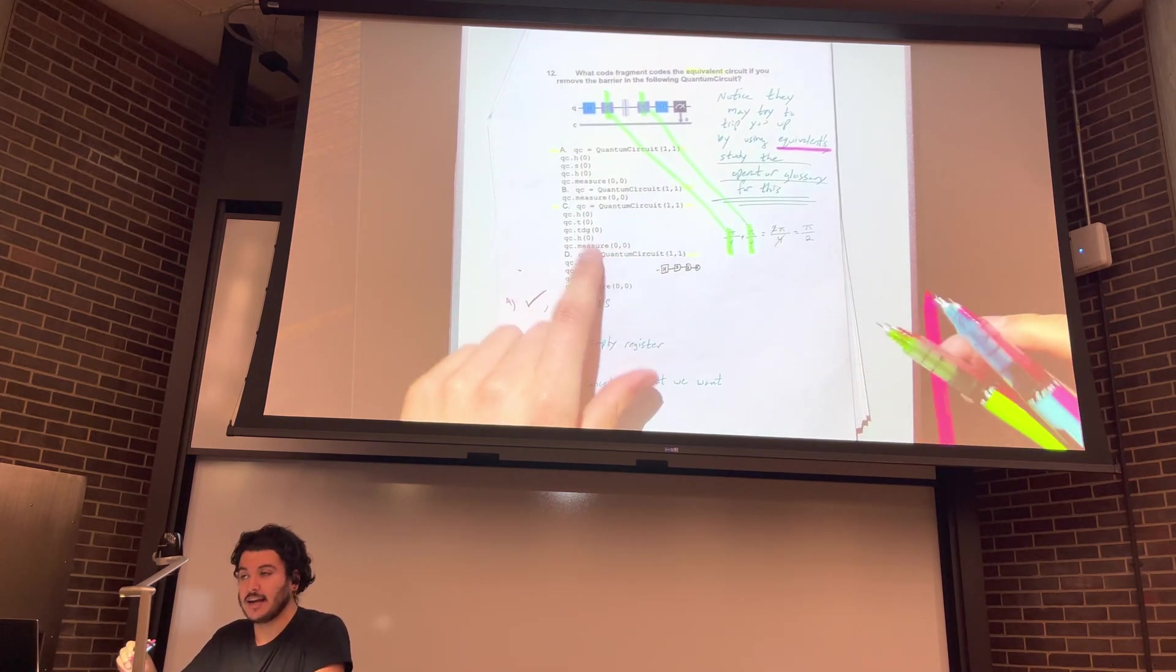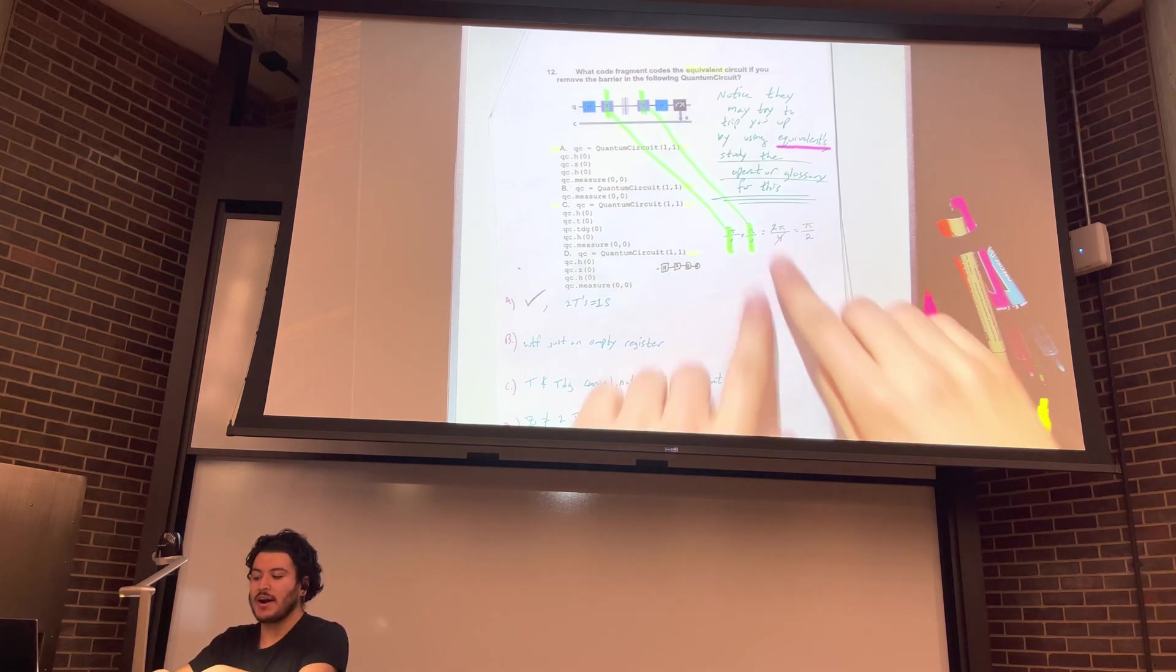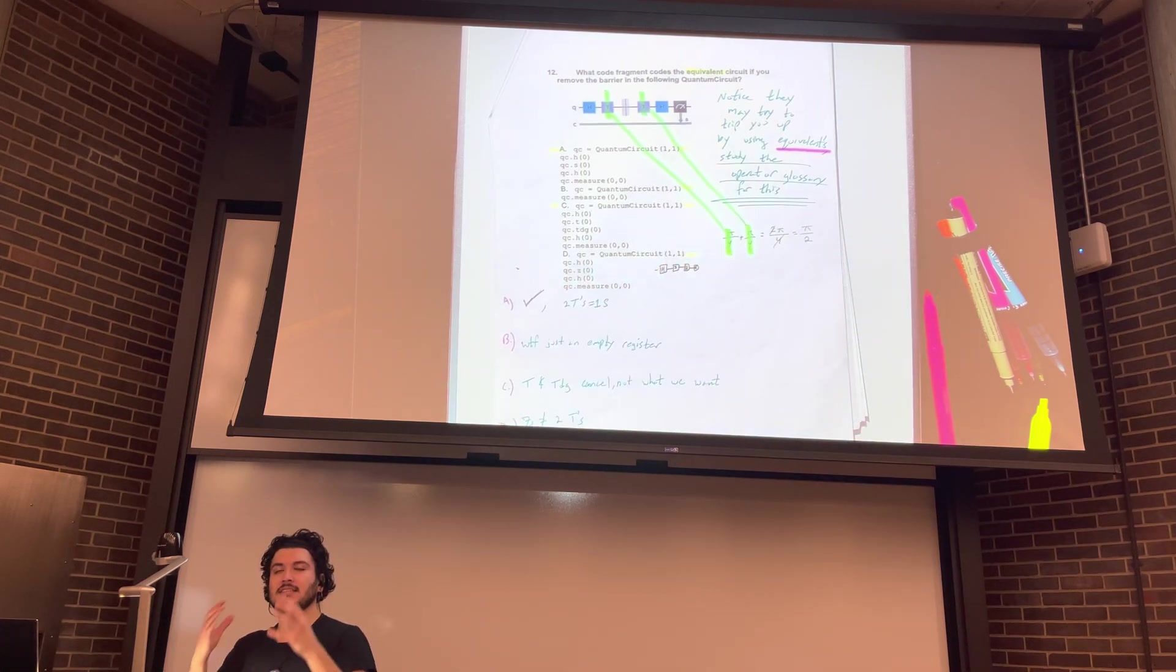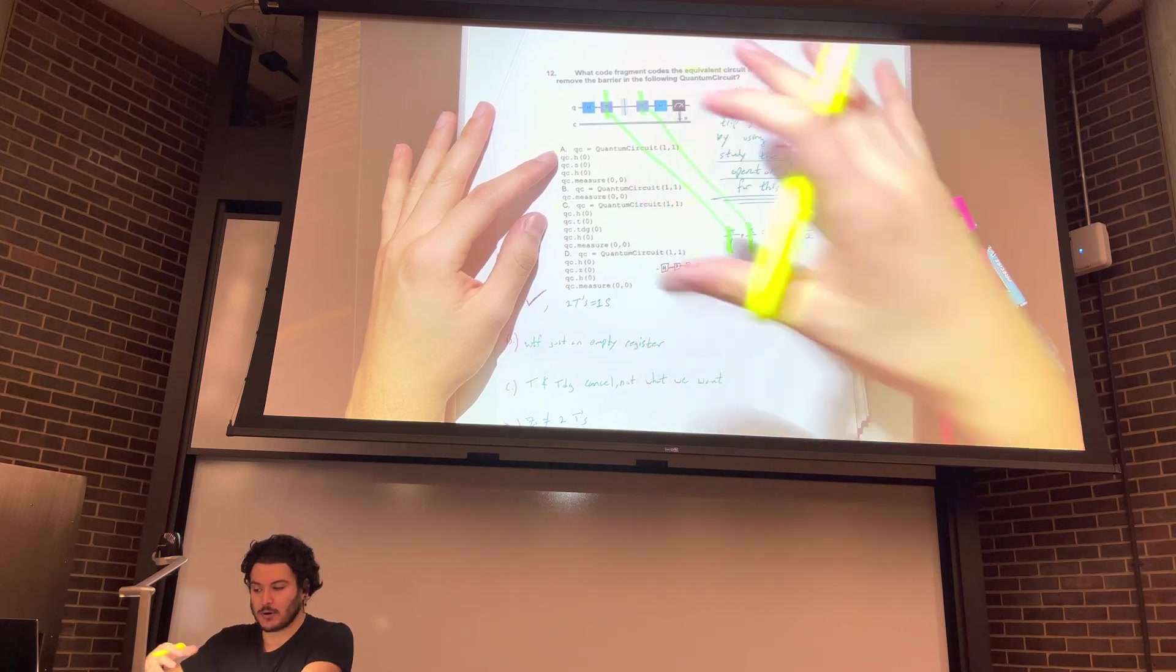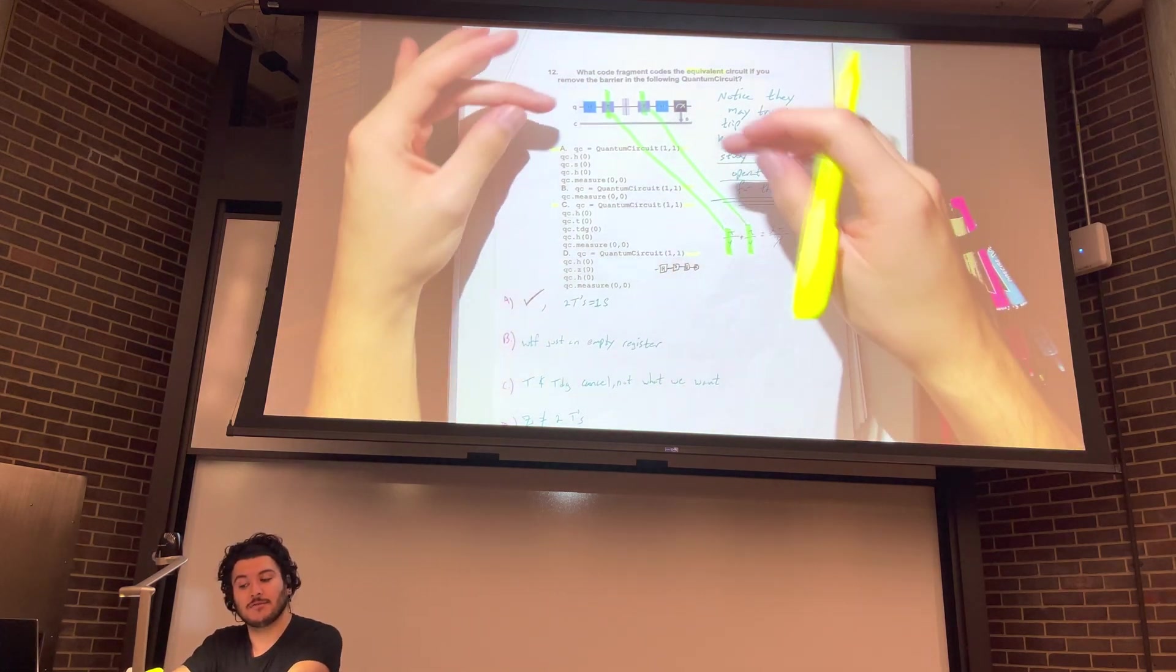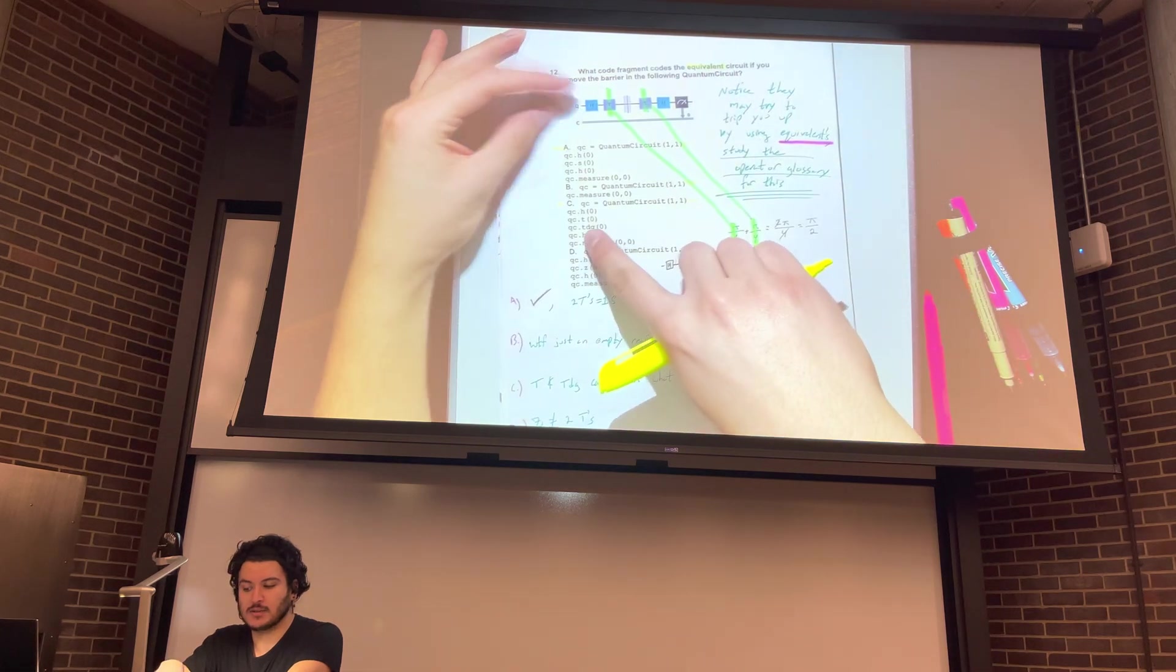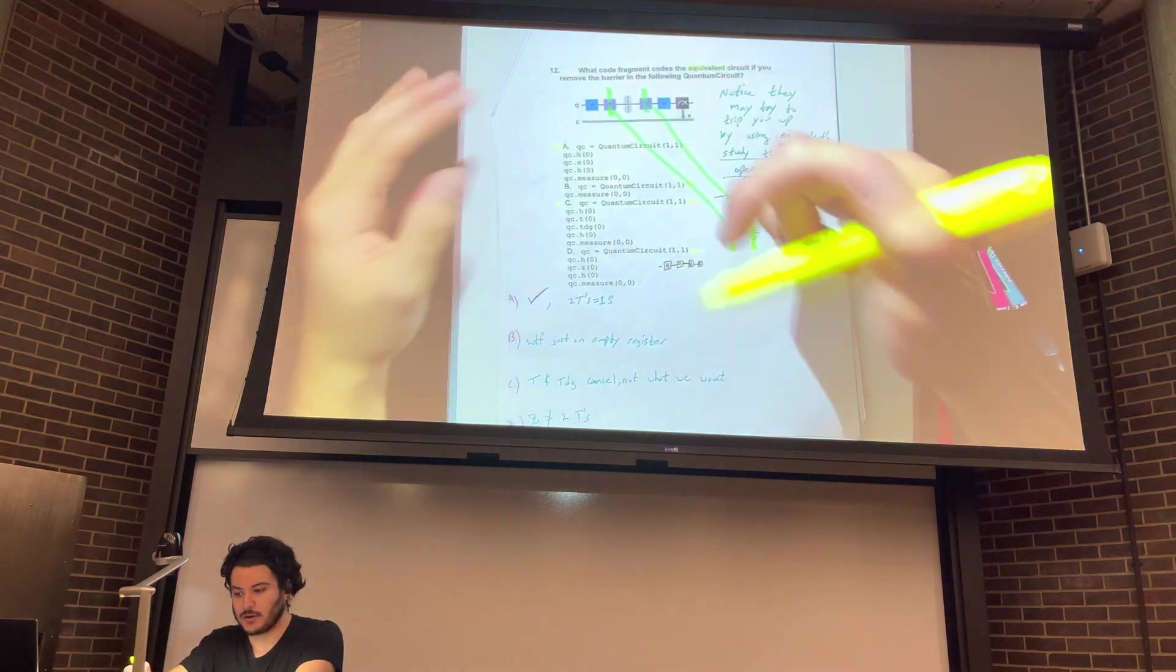H, T, T dagger, and H. These questions are like bits and bobs of different questions put together. So right here, we notice that two Ts simplifies to an S. So we have this idea of gates simplifying to other things. In C, we have the same idea. T and T dagger simplify and actually cancel out. So they have running themes throughout these questions. And the themes stay the same throughout the answers. So I wouldn't be surprised if there was a version of this question where they wanted the equivalent to be this one. Like, you know, this one canceled and they wanted an equivalent that also canceled. So this could be another situation, but that's not the one we're working with. We're working with two Ts.